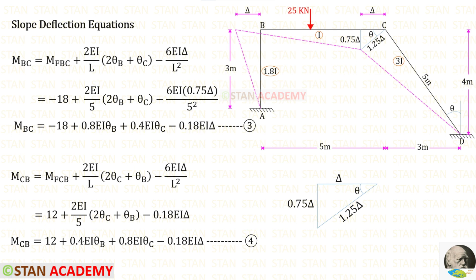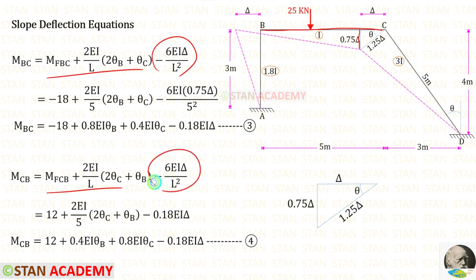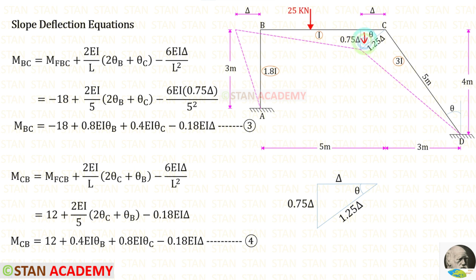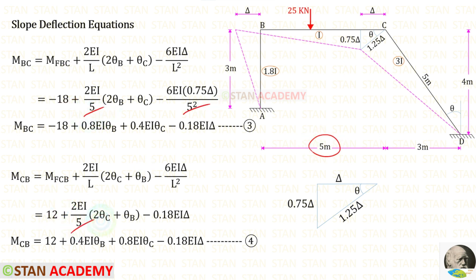Now let us make the slope deflection equations for member BC. Since this member has displacement, we have to add the sway moments. The displacement occurs on the right side and acts downwards, so the sway moments should be applied as negative. For BC, the displacement is 0.75 delta. Let us apply the fixed end moments: minus 18 and 12. Length of BC is 5. We have made 2 equations for member BC.